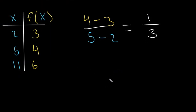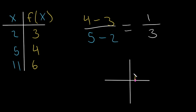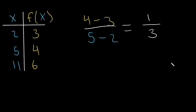So our rise is 1 and our run is 3. On a coordinate plane, if we start at a point and want to find the next point, we go up 1 and then over 3, and we can draw a line through those points. Because 1/3 is less than 1, our line is going to be less steep than the parent function. Let's verify: starting from (5, 4), going up 1 gives y = 5, and going over 3 gives x = 8. So the next point is (8, 5).